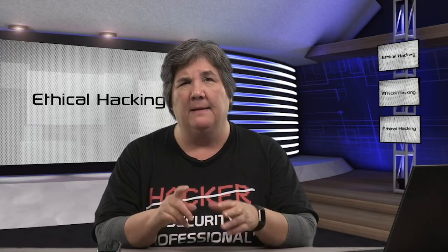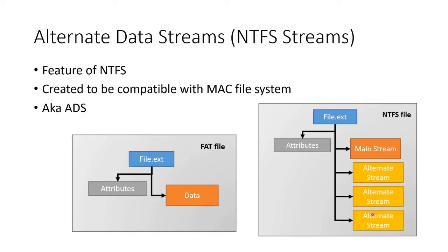Sometimes part of ethical hacking is to hide files in a compromised system, and there are two basic approaches to do it. One is something called alternate data streams, also known as NTFS streams or ADS.